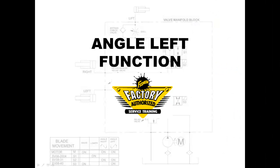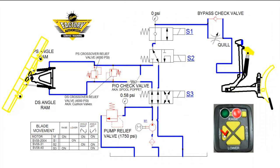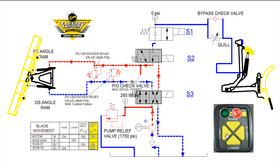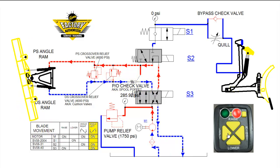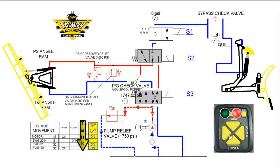We will now demonstrate the angle left function. Pressing the angle left button on the cab control activates the motor and the S2 and S3 cartridge valves. Hydraulic fluid flows through the shifted S3 valve, through the shifted S2 valve, providing pilot pressure to the PO check valve and extending the passenger side ram. The retracting driver side ram forces hydraulic fluid through the PO check valve and the shifted S3 valve, and back to tank. When the blade is fully angled, pressure will build to the pump relief setting, and then bypass directly to tank.